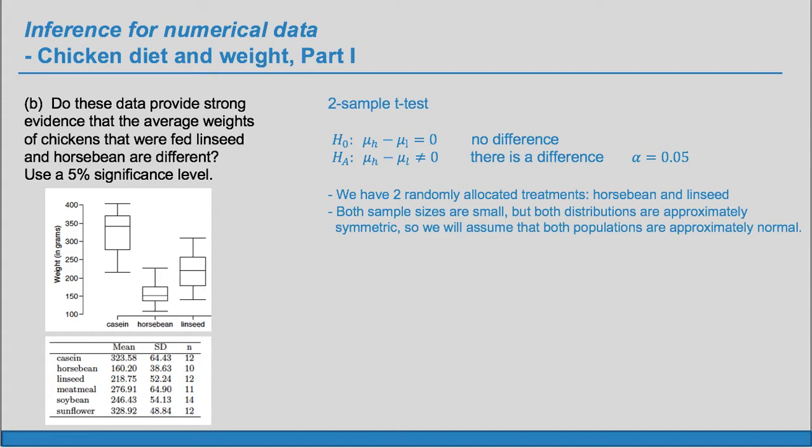So we will assume that the populations are approximately normal. So, we say that that condition is reasonable. Okay, so now let's find our t-statistic. t equals the observed minus the null over the se.